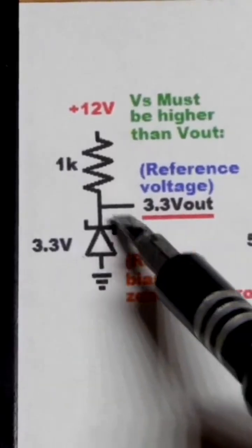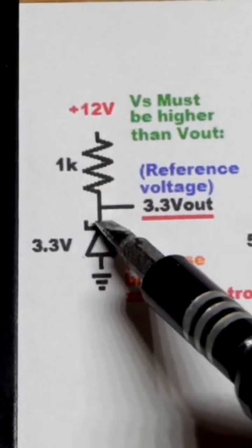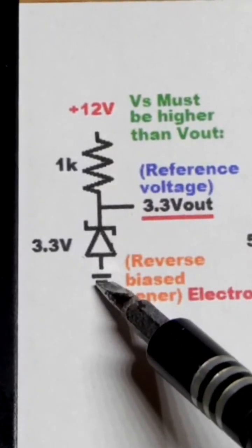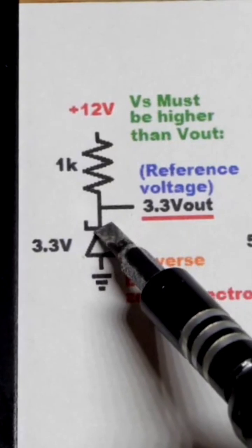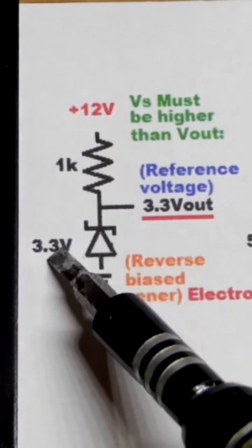A Zener diode voltage regulator circuit typically has a resistor connected to the positive supply and then the Zener diode reverse biased headed to the negative supply. So it is not intended to stop current while it's reverse biased.